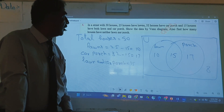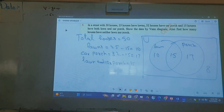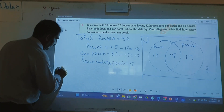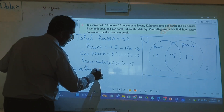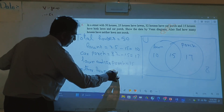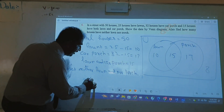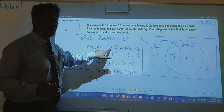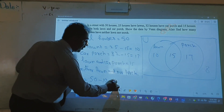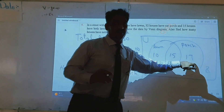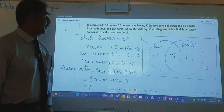Because if I ask how many houses have a lawn, it is already given as 25. How many houses have neither lawn nor porch? Total = 50. We subtract: 50 minus 10 minus 15 minus 17. All three values subtracted from the total gives us 8 houses having neither car porch nor lawn.